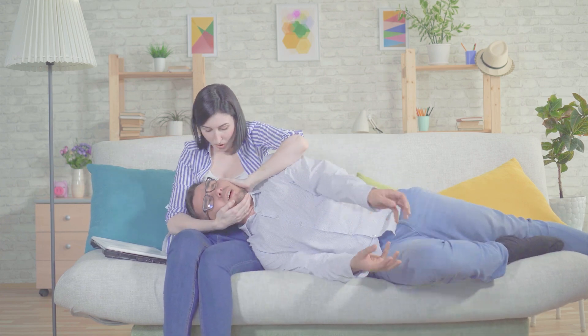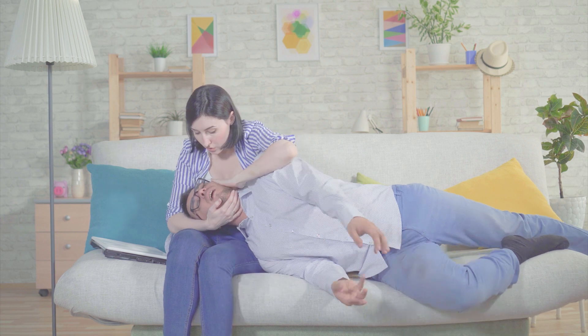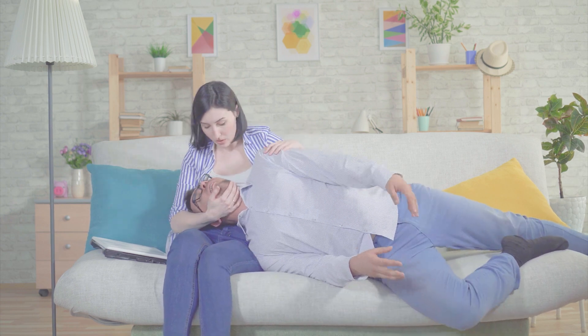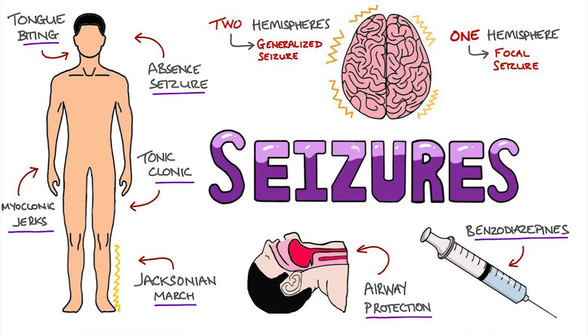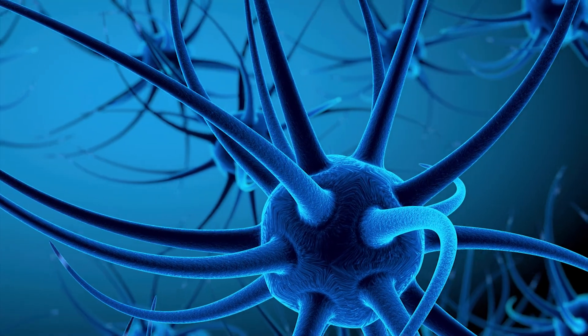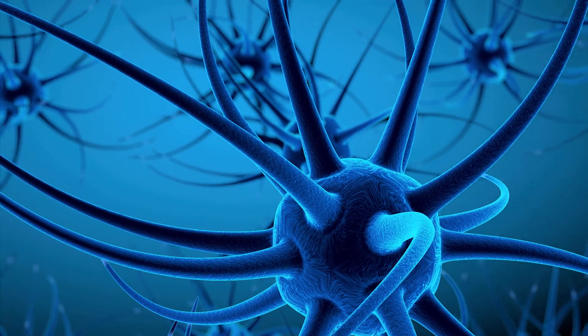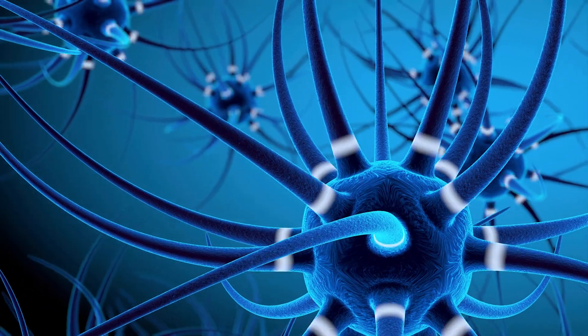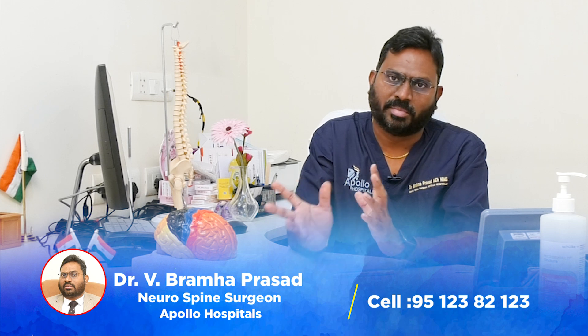Seizures are abnormal electrical activity in the brain. There are 85 billion neurons in the brain. The neural cell connections are known as neurotransmitters — this signaling mechanism, when abnormal, is known as an abnormal spark in the brain. This is called a seizure.